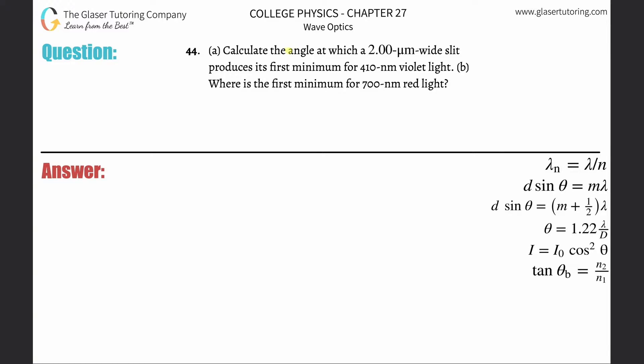Number 44, letter A. Calculate the angle at which a two micrometer wide slit produces its first minimum for 410 nanometer violet light.